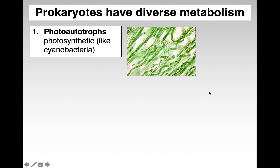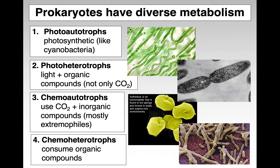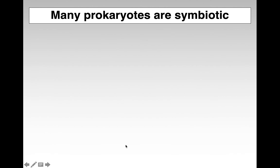They have a huge diversity of metabolism — that is the most important thing. They can be photoautotrophs, meaning photosynthetic. They can be photoheterotrophs, meaning they use organic molecules and light. Chemoautotrophs use carbon dioxide and inorganic compounds. And then chemoheterotrophs consume organic molecules.